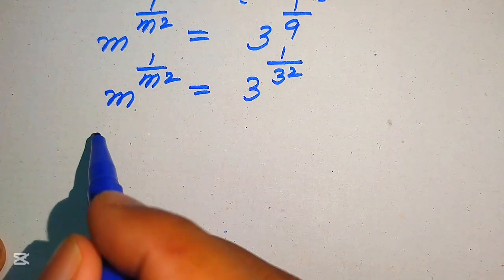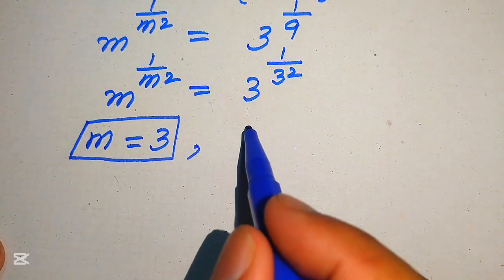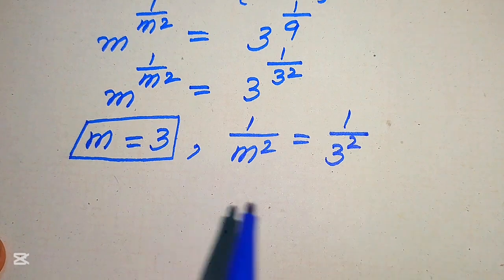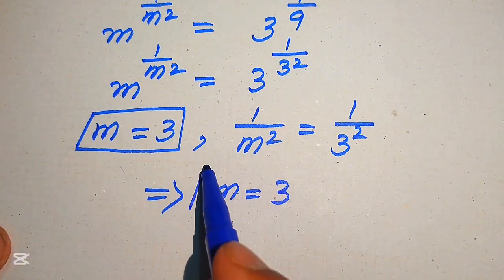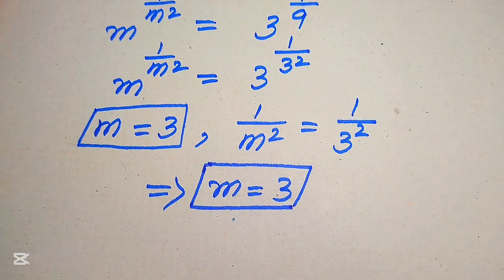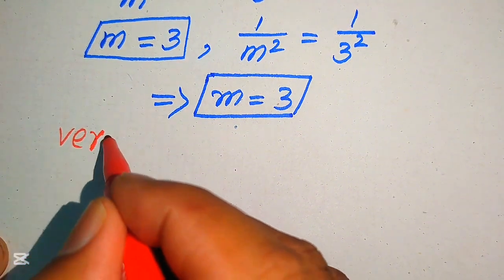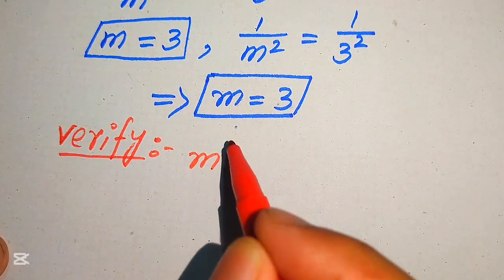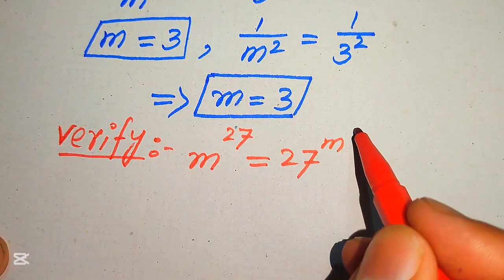Comparing both sides — left hand side: m to the power of 1 over m squared; right hand side: 3 to the power of 1 over 3 squared — we compare the bases to get m equals 3, and comparing the exponents gives 1 over m squared equals 1 over 3 squared, confirming m equals 3. To verify, we substitute m equals 3 into the original equation: m to the power of 27 equals 27 to the power of m squared.